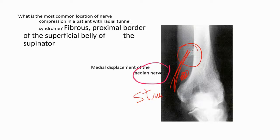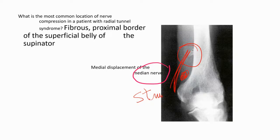The arcade of Struthers is a different structure — it affects the ulnar nerve. There is another problem also related to compression of the nerve at the elbow, and that is radial tunnel syndrome or posterior interosseous nerve entrapment. The proximal fibrous border of the superficial belly of the supinator muscle will affect the posterior interosseous nerve.